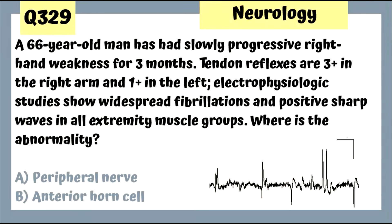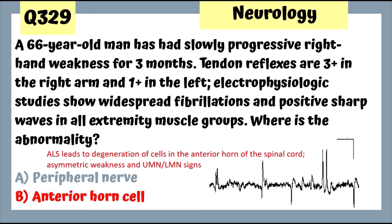Question 329: A 66-year-old man with slowly progressive right hand weakness for three months — ALS. The abnormality in ALS is the anterior horn cell. ALS leads to degeneration of cells in the anterior horn of the spinal cord, asymmetrical screening weakness, and both upper and lower motor neuron signs.